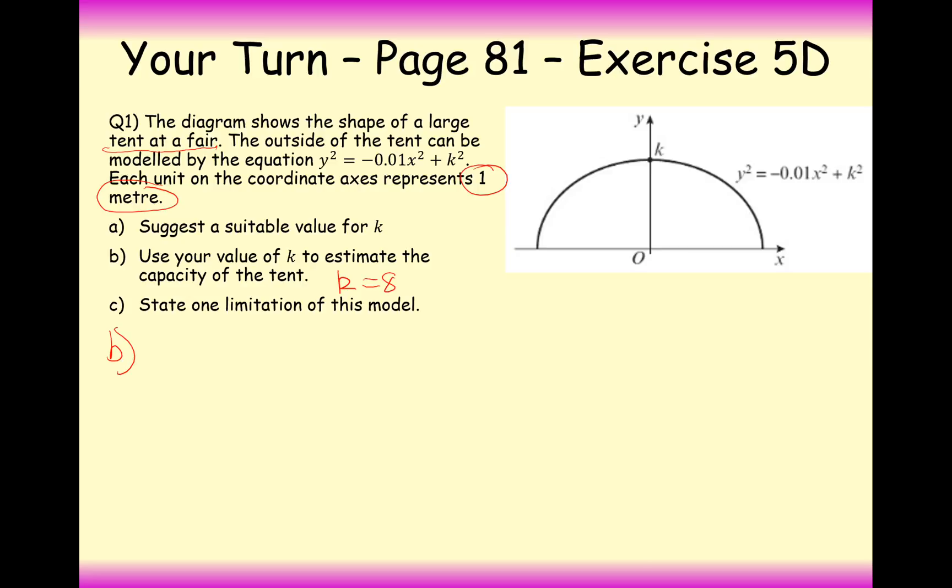Alright, so part B now looks for us to substitute this in to find the capacity of the tent. Now first of all, what formula am I going to apply? Well I'm revolving around the y axis. So the formula I'm going to need in this case here is going to be pi integrated from A to B of x squared dy. So the first problem I've got is to rearrange my equation and make x the subject. Now I've chosen 8 here, so I'm going to substitute in 64.